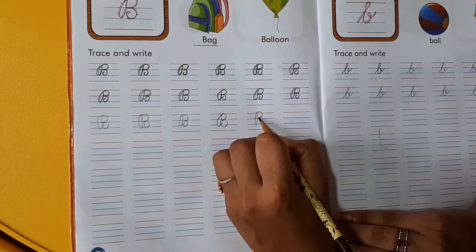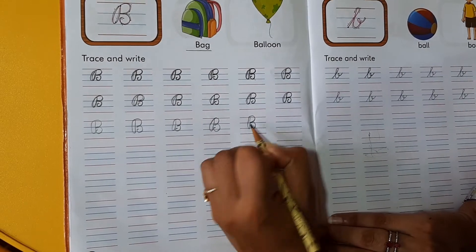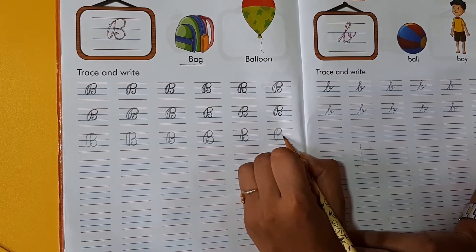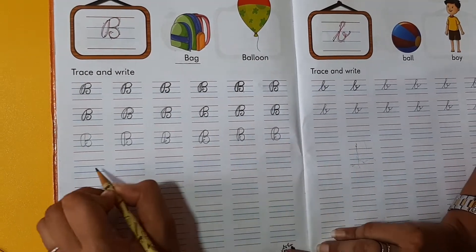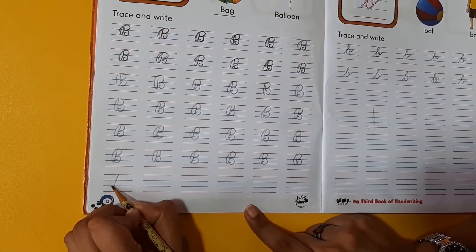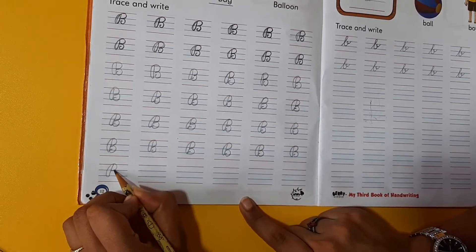And B se kya hooga? B for brownie. Yes. Aak chhi hothi hai na brownie. Yes. Yes. B for banana. Healthy, healthy banana.